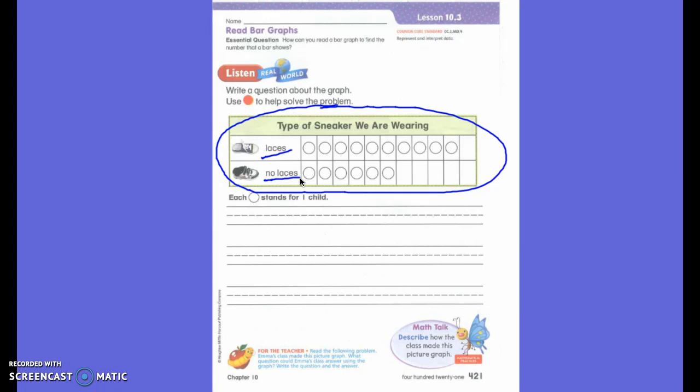Circles. Okay, very good. We do notice circles. What are these circles for? How many children? Okay, how many children in each row. Okay, what else do you notice?